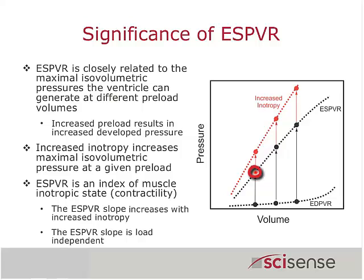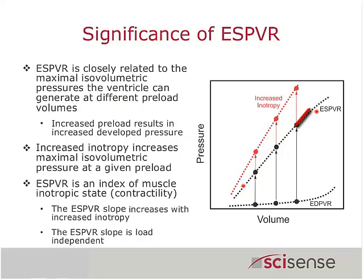If we now increase the end-diastolic volume by inflating that balloon, then on subsequent beats the heart will generate a greater pressure. Further increasing the preload volume gives a further increase in developed pressure. Those points follow along a line almost identical to the end-systolic pressure-volume relationship seen during IVC occlusions. Suga, Sagawa, and colleagues in the 70s and 80s showed the similarity — though not necessarily identical — between isovolumetrically contracting ventricles and those actually shortening and ejecting blood in generating the ESPVR.